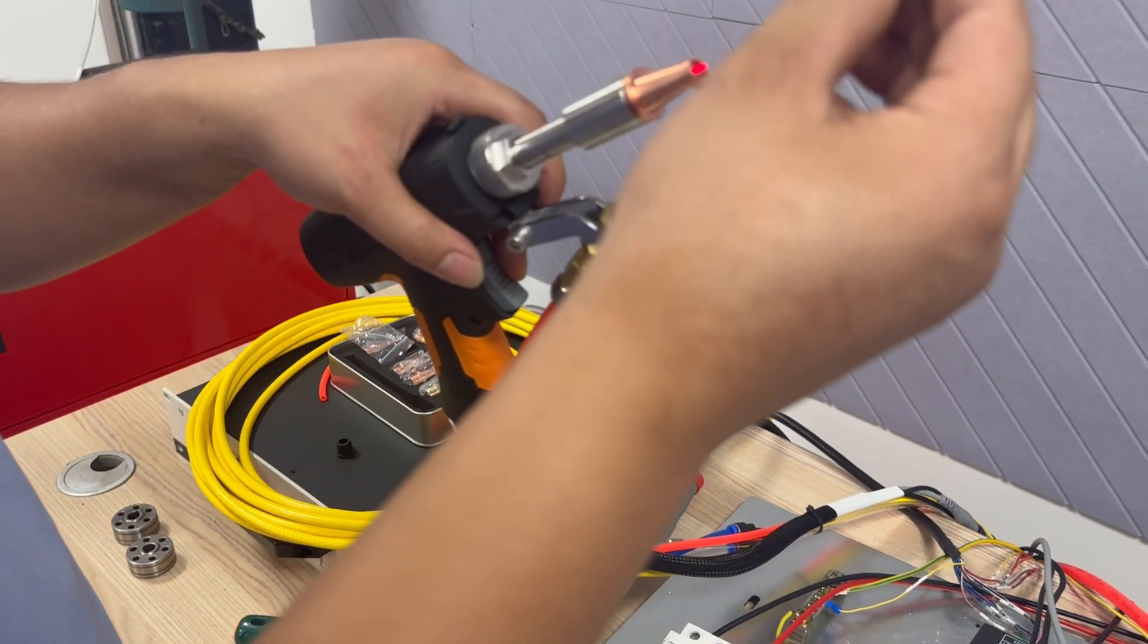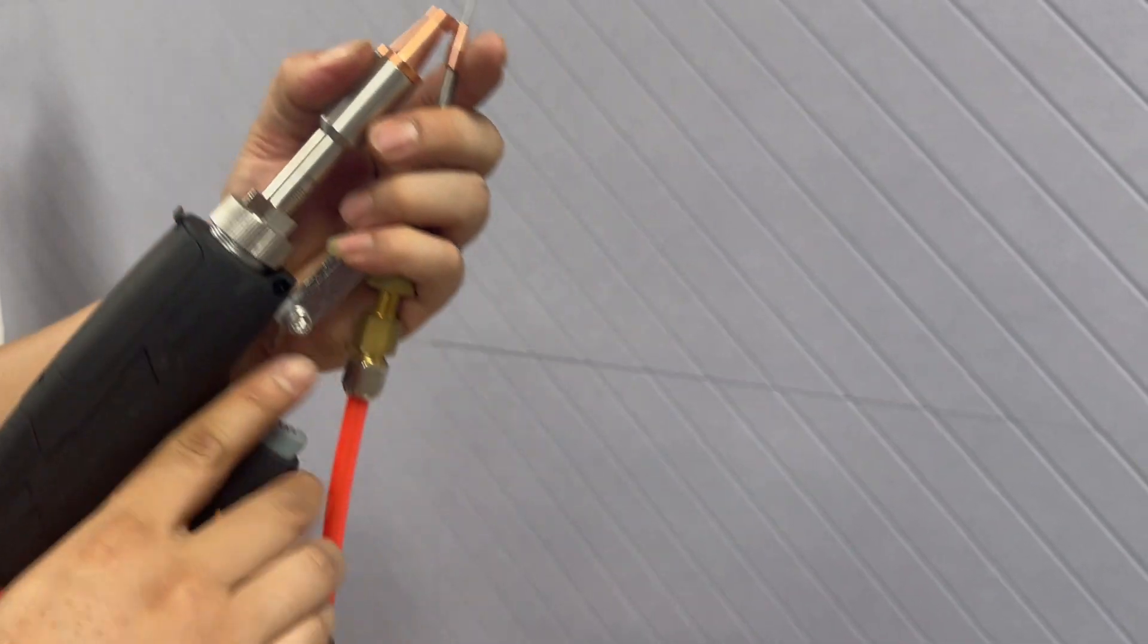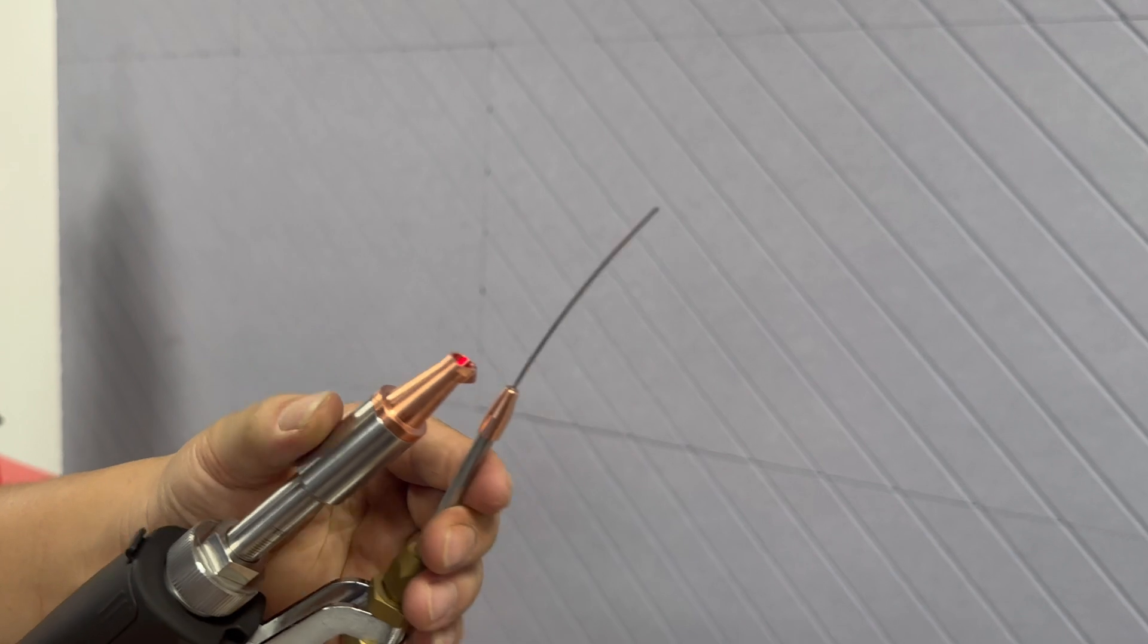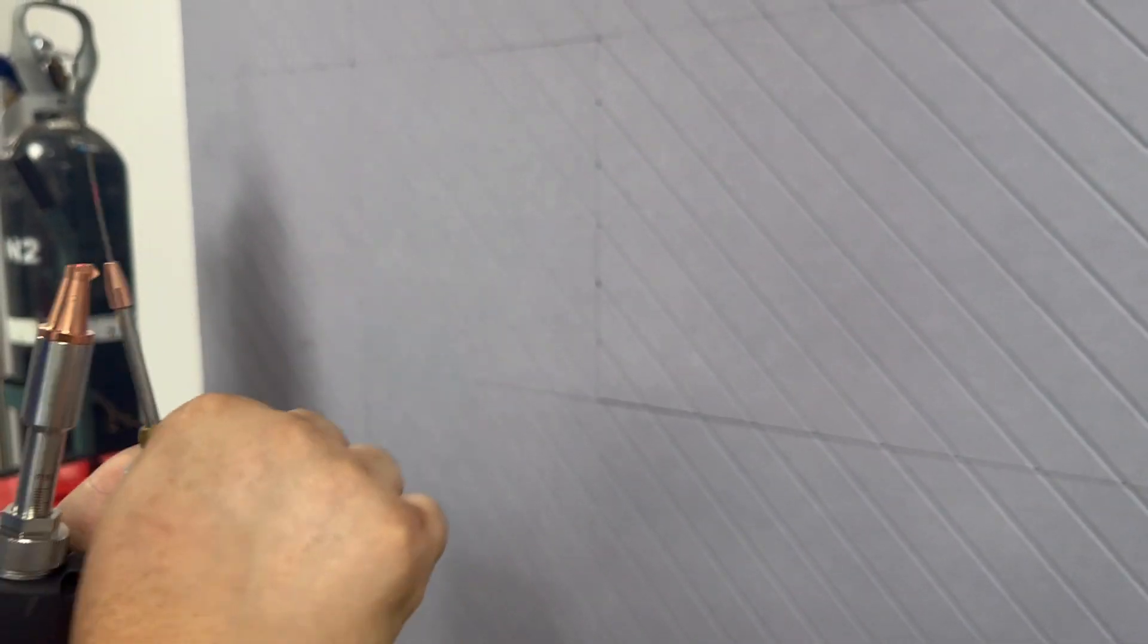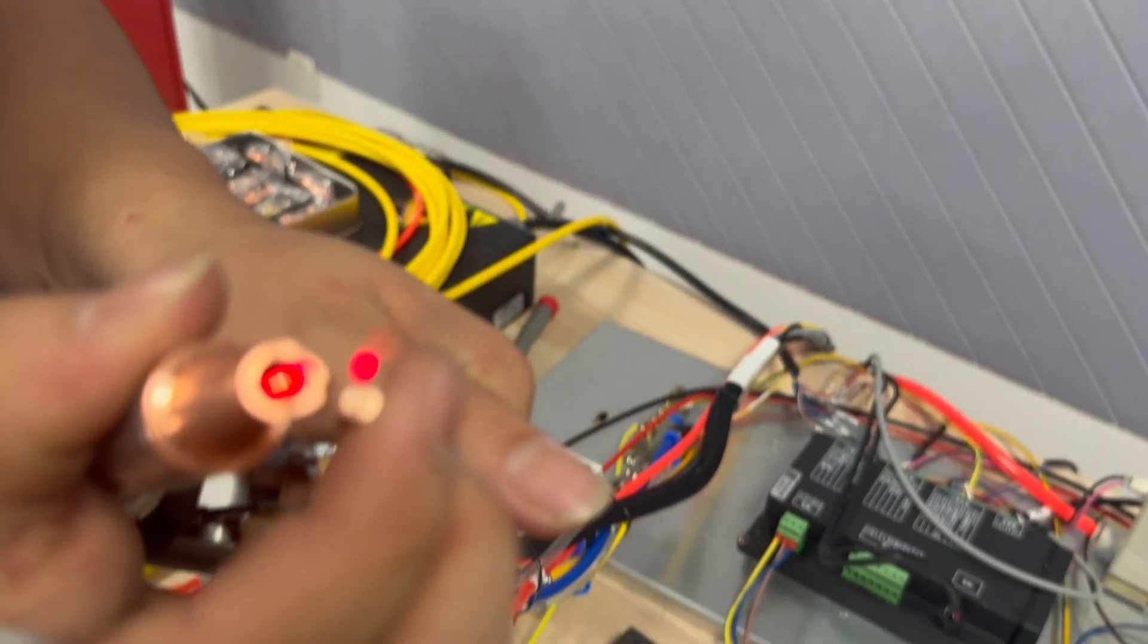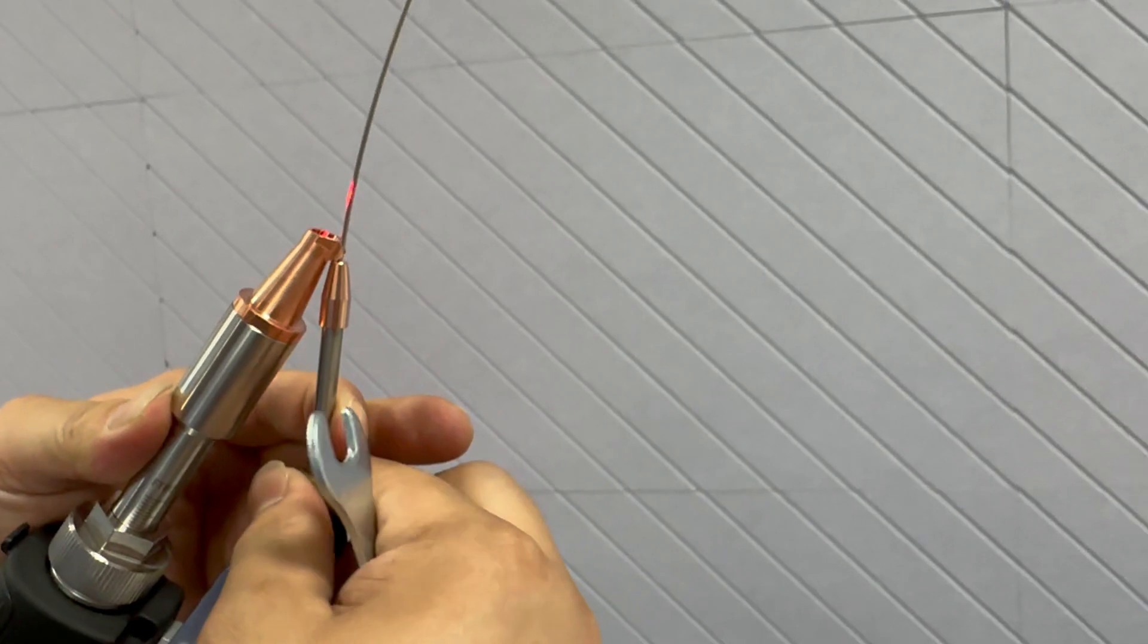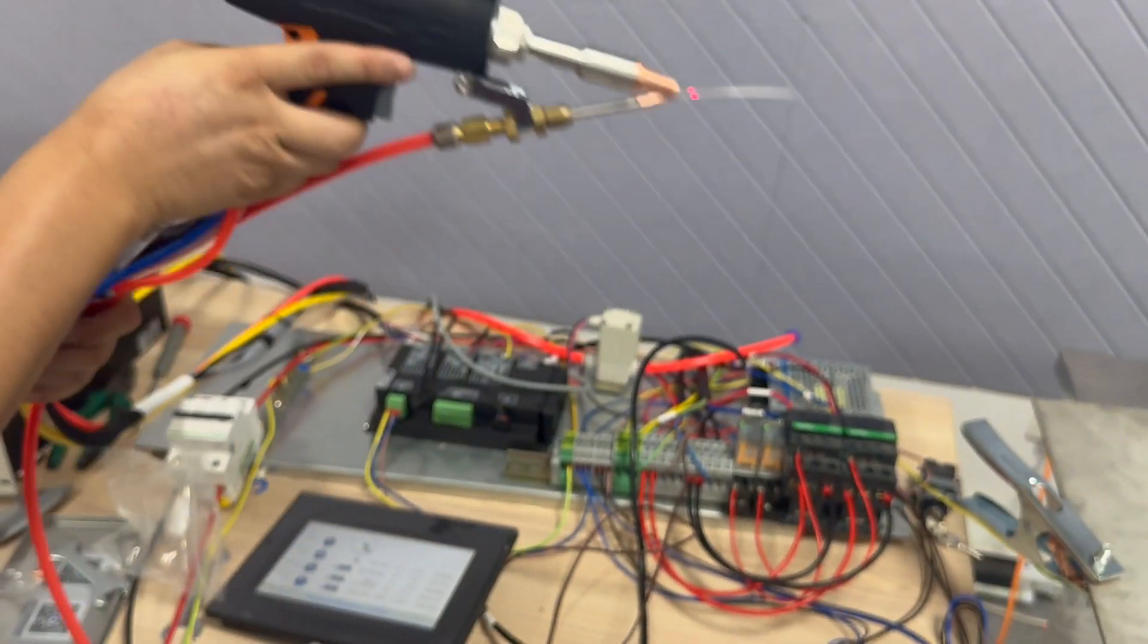Put it on here. Now we see this wire cannot be fixed in this nozzle, it is not fixed. Then we adjust it again, we retract it a little bit, ensure the wire is fully fixed here. This is roughly the right position, then our fitting tool is installed.